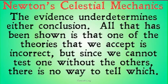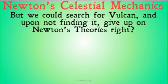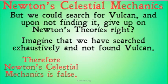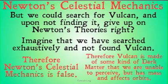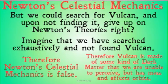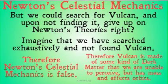Before you start typing in the comments — there might be a response that goes something like this: what if we searched for Vulcan and, upon not finding it, gave up on Newton's theories? Imagine we've searched exhaustively and not found Vulcan. Therefore, we conclude Newton's celestial mechanics is false — right? I'm not so sure. Maybe we could instead conclude that Vulcan is made of some kind of dark matter that we are unable to perceive but has mass and affects orbits. Because we want to hold on to our theory, we posit something else that explains it, getting rid of the assumption that anything with mass can be perceived, and adding another theory to make Newton's celestial mechanics consistent with the information we're getting from the world. Once again, we're underdetermined as to which conclusion we should draw.